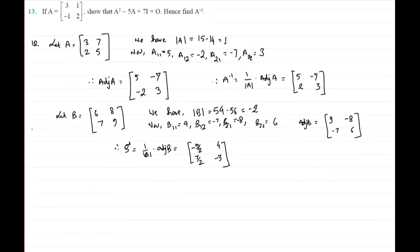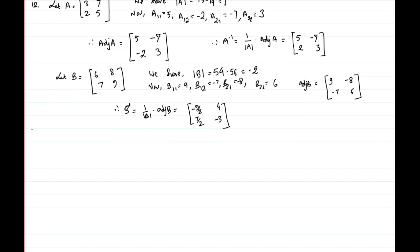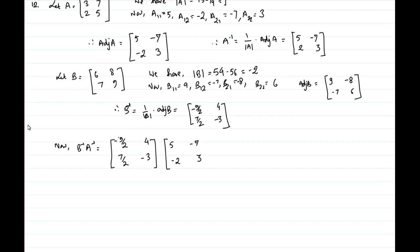Now we need to find B inverse A inverse. So B inverse A inverse equals [−9/2, 4; 7/2, −3] times [5, −7; −2, 3]. This product gives us [−61/2, 87/2; 47/2, −67/2]. We label this as equation number 1.